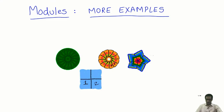Today we will talk about more examples of modules. So far, we have seen modules over the ring Z, Abelian groups, modules over the ring K[X], which are basically vector spaces together with a linear operator.